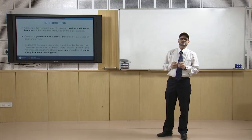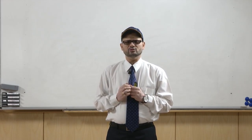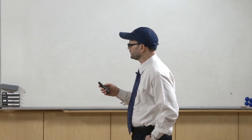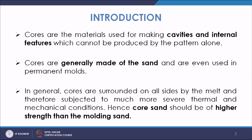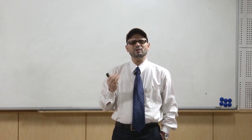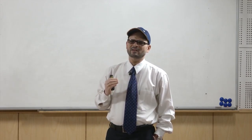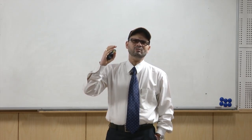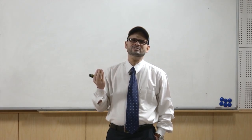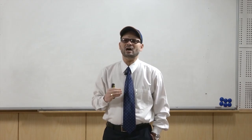In casting, if we have to make an internal cavity, we have to use cores. Cores are basically the materials used for making cavities and internal features which cannot be produced by the pattern alone. The pattern gives the overall cavity of the casting, whereas if you want to have a drilled hole in the casting and withdrawal is not possible, we use cores — sand or metal portions placed so that when metal is poured, there will be no metal at that place, creating a void space.